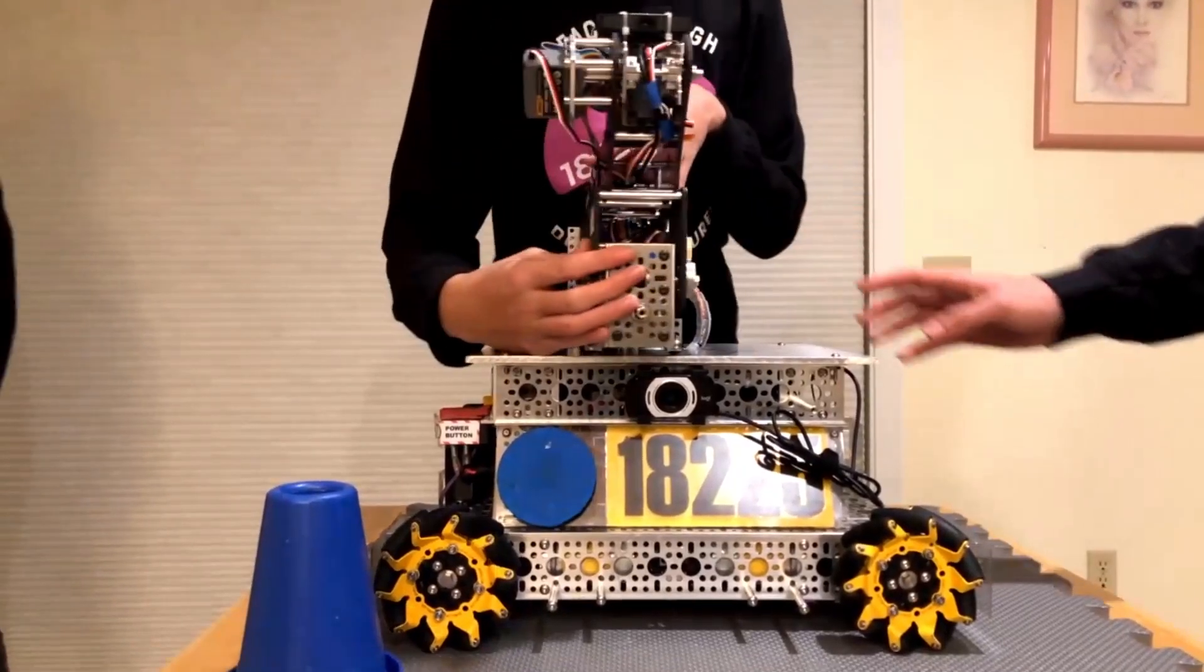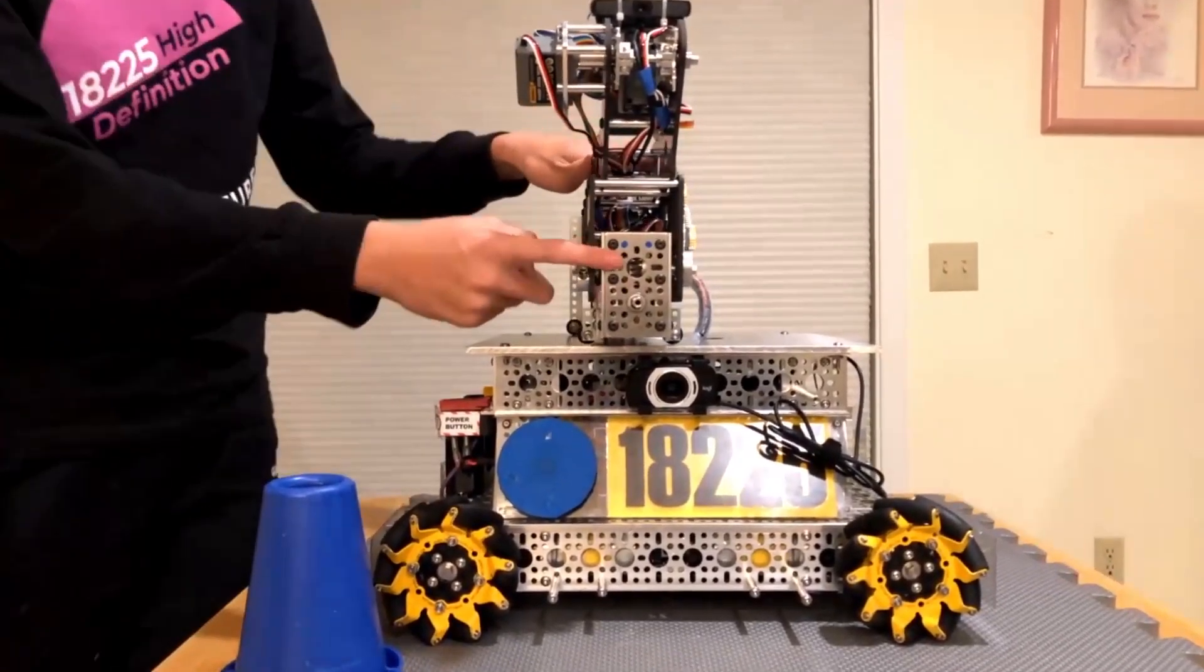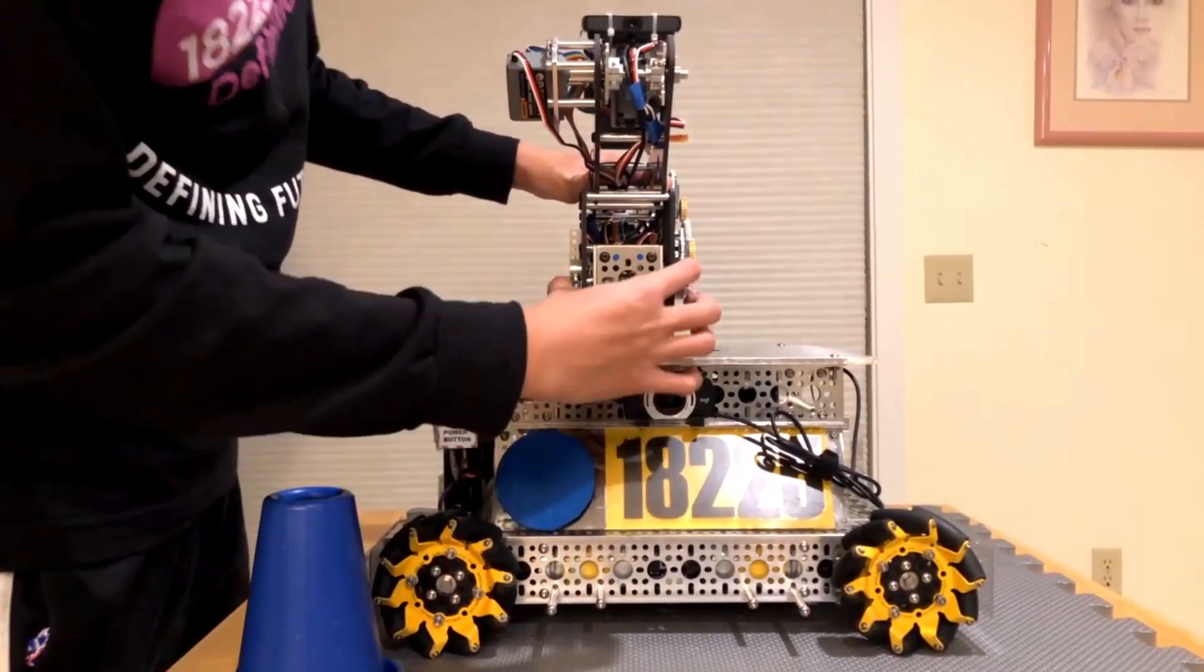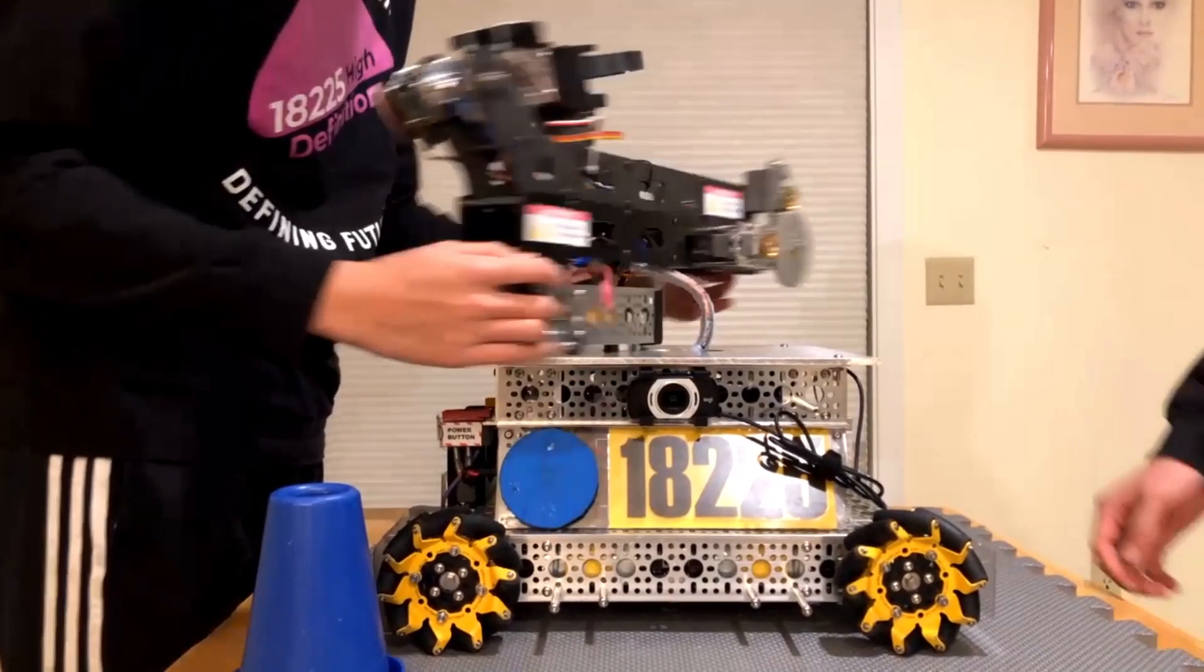Moving up, we've got the wing here. So if you can see, this is just a normal goBILDA logo from here. And this is connected by two hubs onto the next joint, which is going to be up here.